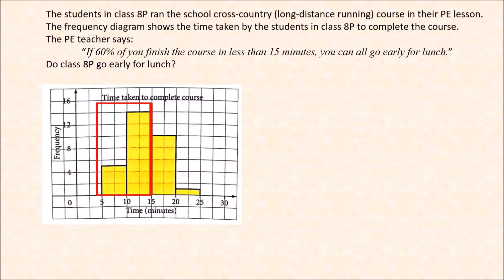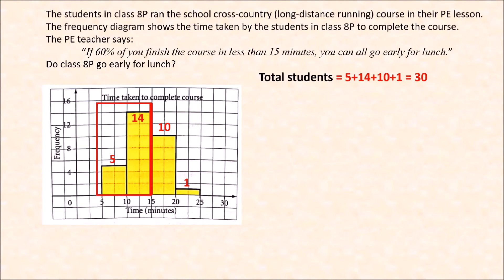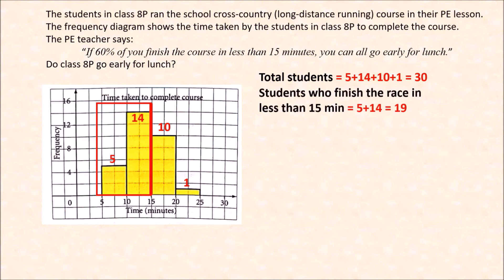The two bars from 5 to 10 minutes and 10 to 15 minutes show us the students who finished in less than 15 minutes. The first bar (5–10 minutes) has 5 students; the second (10–15 minutes) has 14 students; 15–20 minutes has 10 students; and 20–25 minutes has 1 student. Total students: 5 + 14 + 10 + 1 = 30. Students finishing in less than 15 minutes: 5 + 14 = 19.